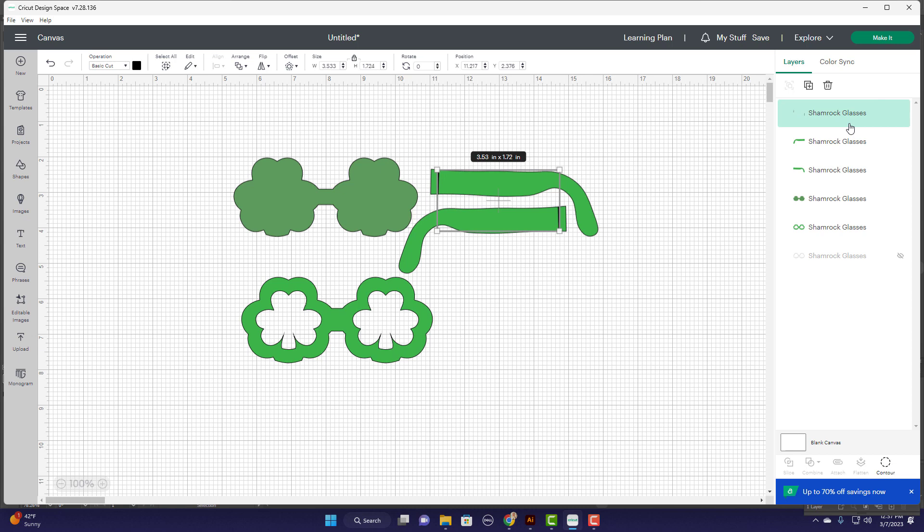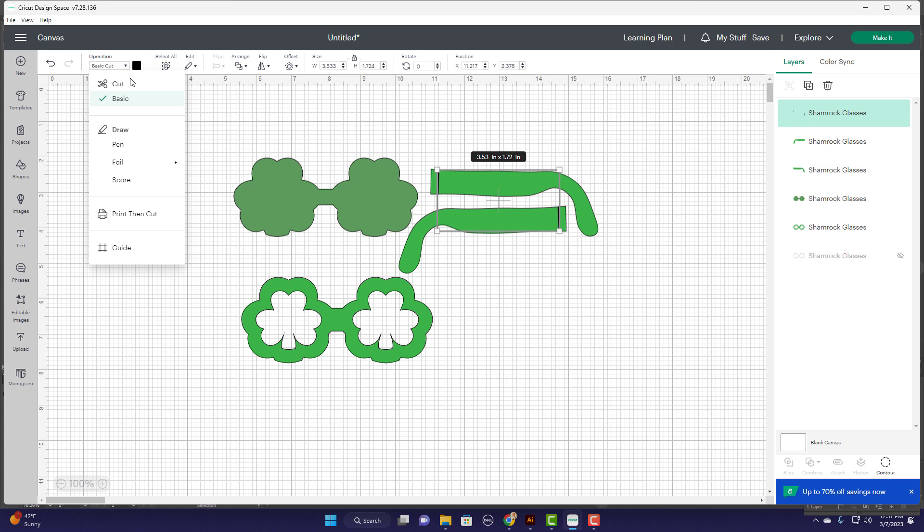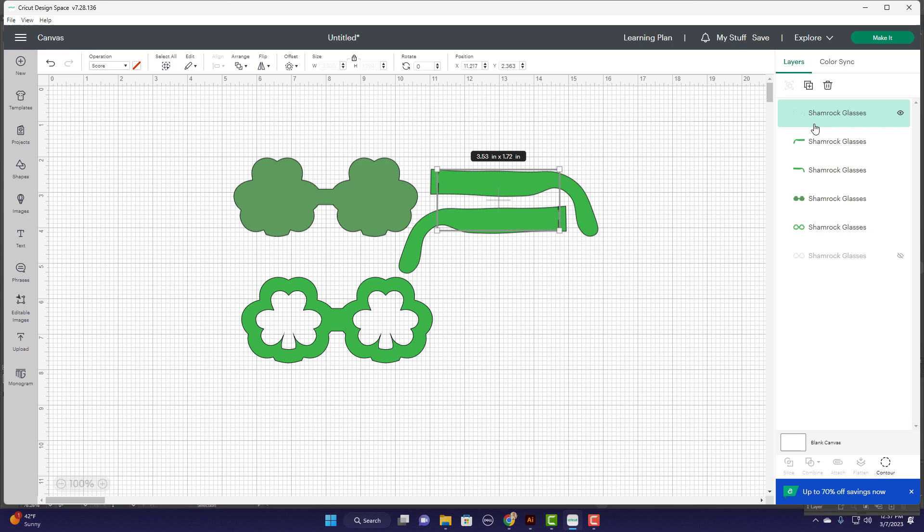So we're gonna go ahead and hit ungroup again and you will want to select the lines. It's easier for me to do it over here sometimes in the layers panel. Right now it's the basic cut operation and I want to go down and I want to change that to score.